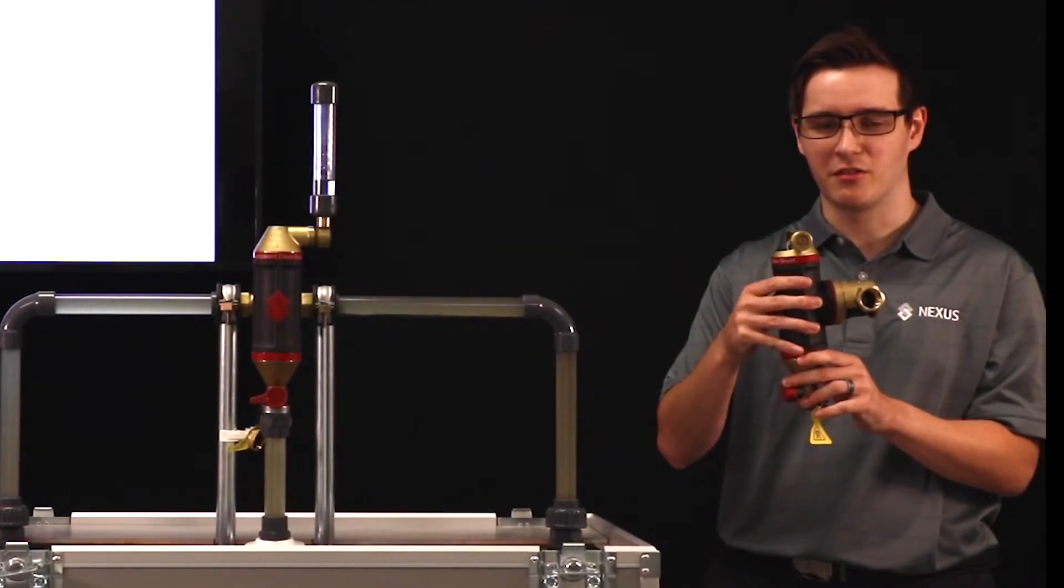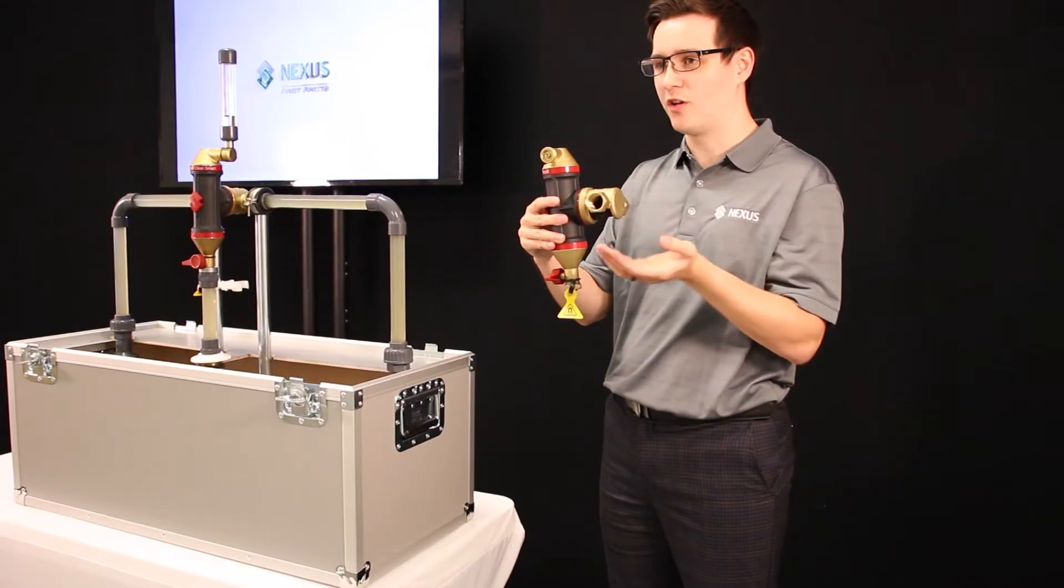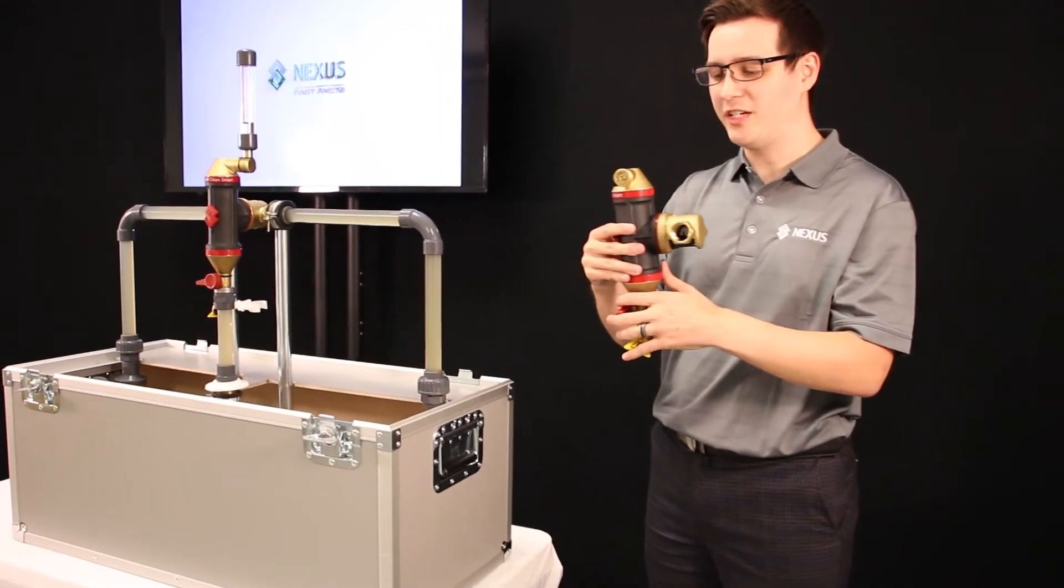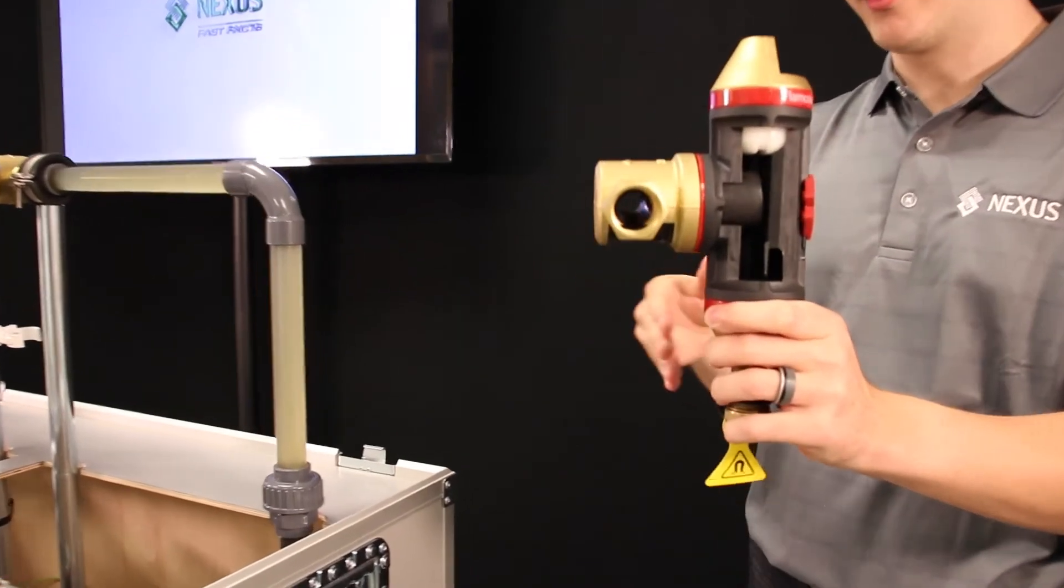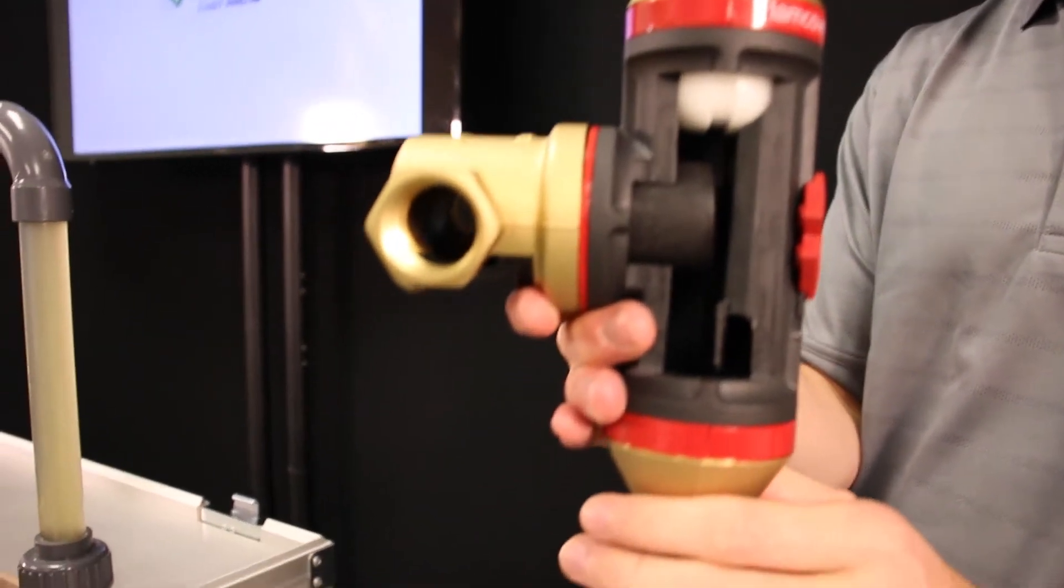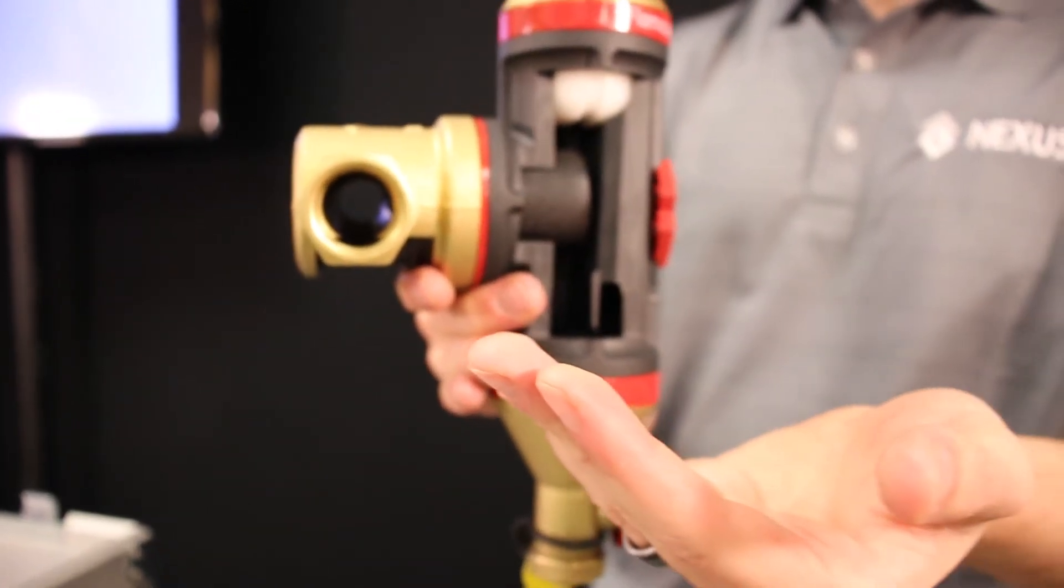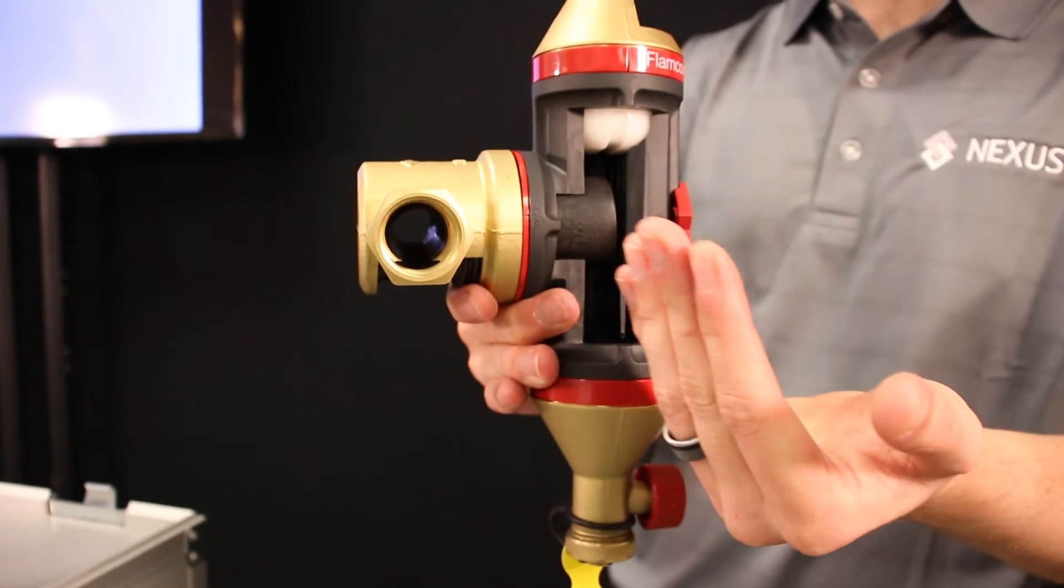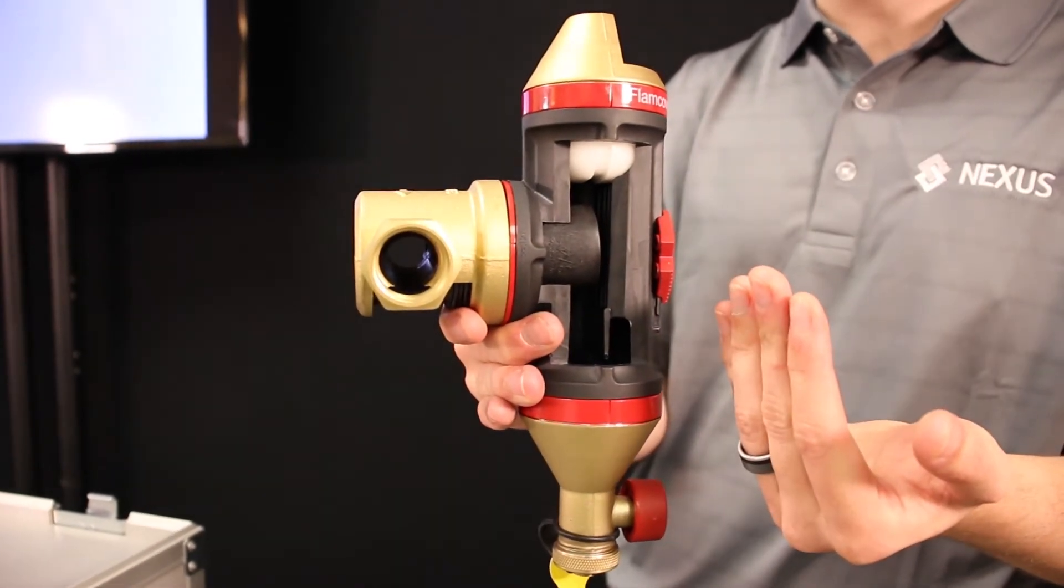It's there to slow the water down and allow the air to group to the top and the dirt to fall to the bottom. What's unique about the Clean Smart is that if you take a look through the pipework, there's little to no restriction there. So as the water goes through the pipework, it basically separates 10% of the water and that's enough to capture 40% of the air and the dirt.